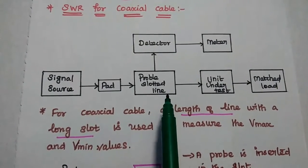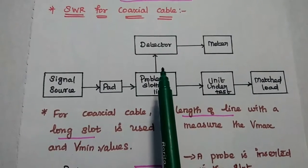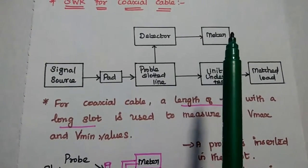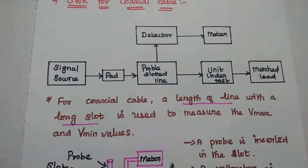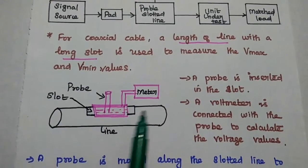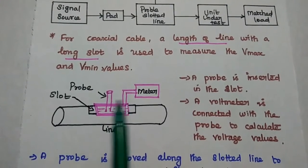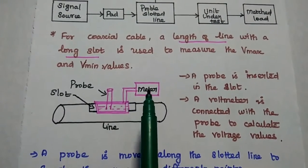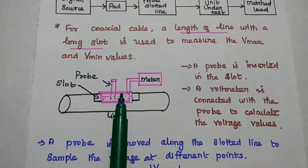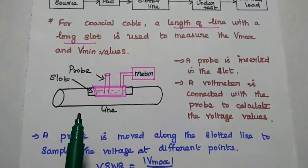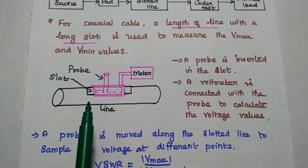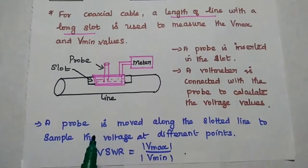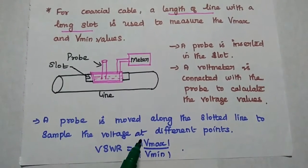Here we consider a length of coaxial line with a long slot. We connect the detector to the coaxial probe through this slotted line. From the detector we can get the values of maxima and minima using the voltmeter, as shown clearly in the diagram. The coaxial cable has a slot on top, and a movable probe is connected along this slot with the detected output going to the voltmeter. The probe is moved along the slotted line to take samples of voltage at different points, giving maximum and minimum voltage values, from which we calculate the standing wave ratio using Vmax / Vmin.